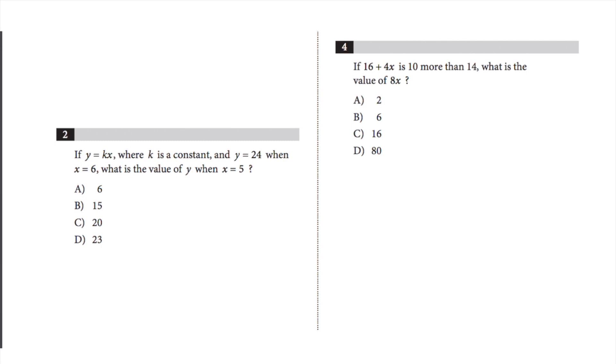For example, for question 4, I think that the answer is 16, but to make sure, I can plug it in backwards. So, if according to my answer, 8x equals 16, x should equal 16 divided by 8, which is 2. Now, I substitute this in the original question.